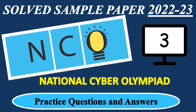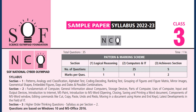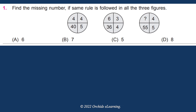NCO Class 3, National Cyber Olympiad's latest sample paper 2022-23. Find the missing number if the same rule is followed in all the three figures. The answer is B: 7.